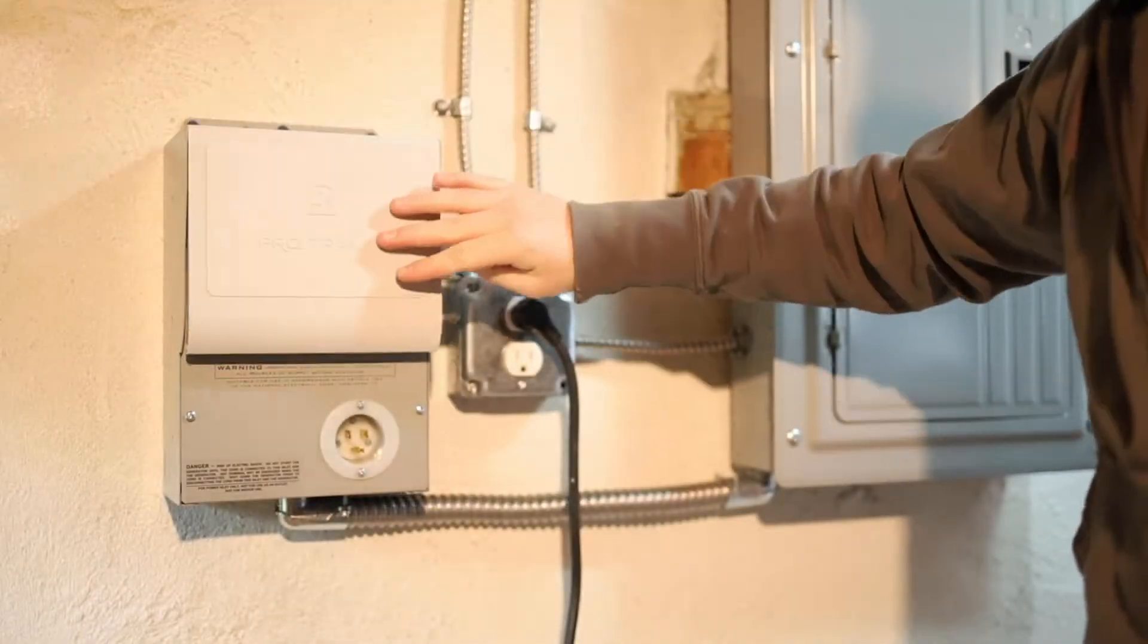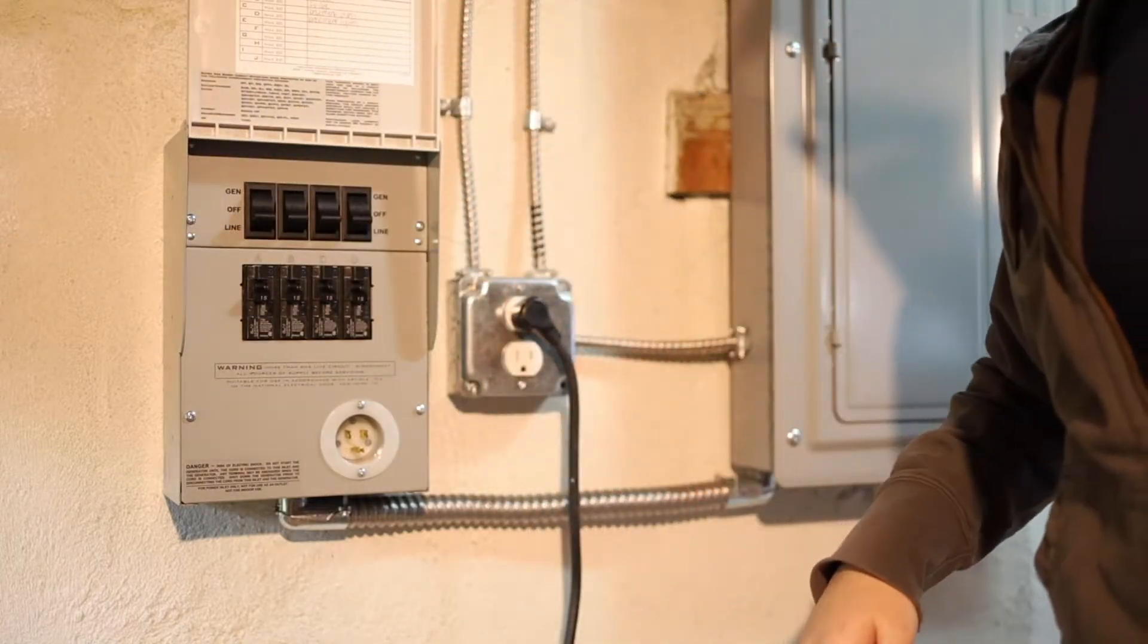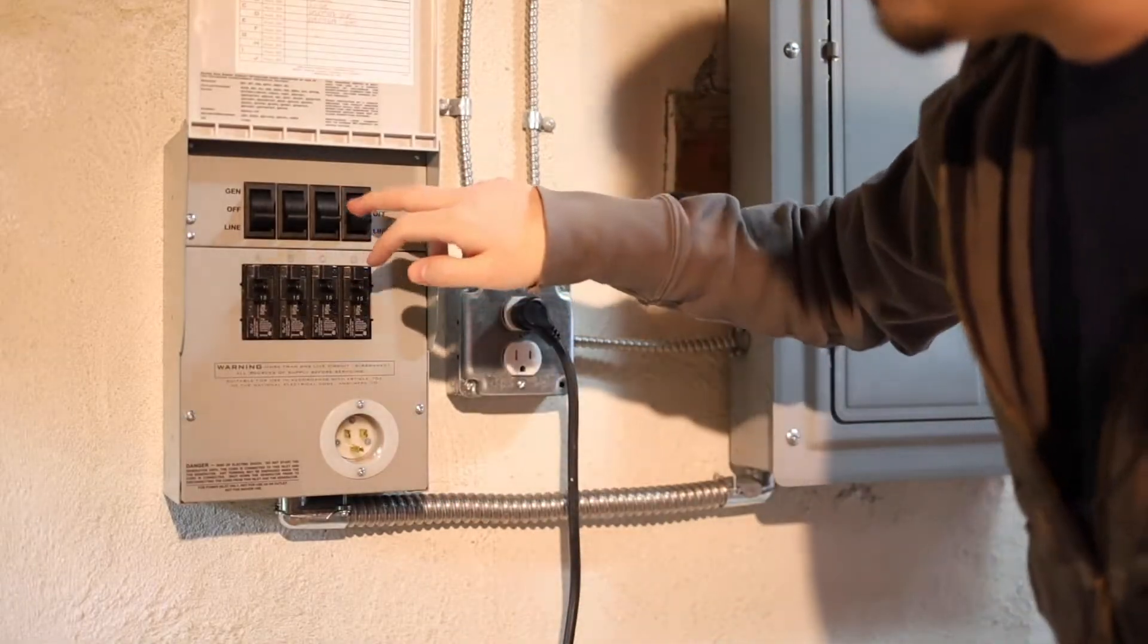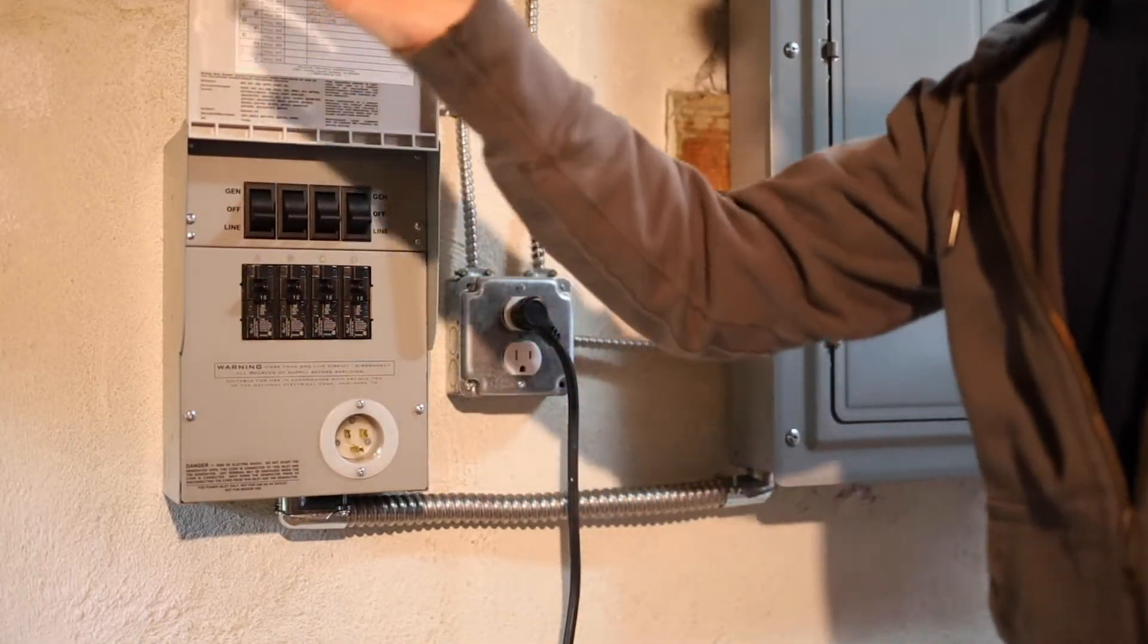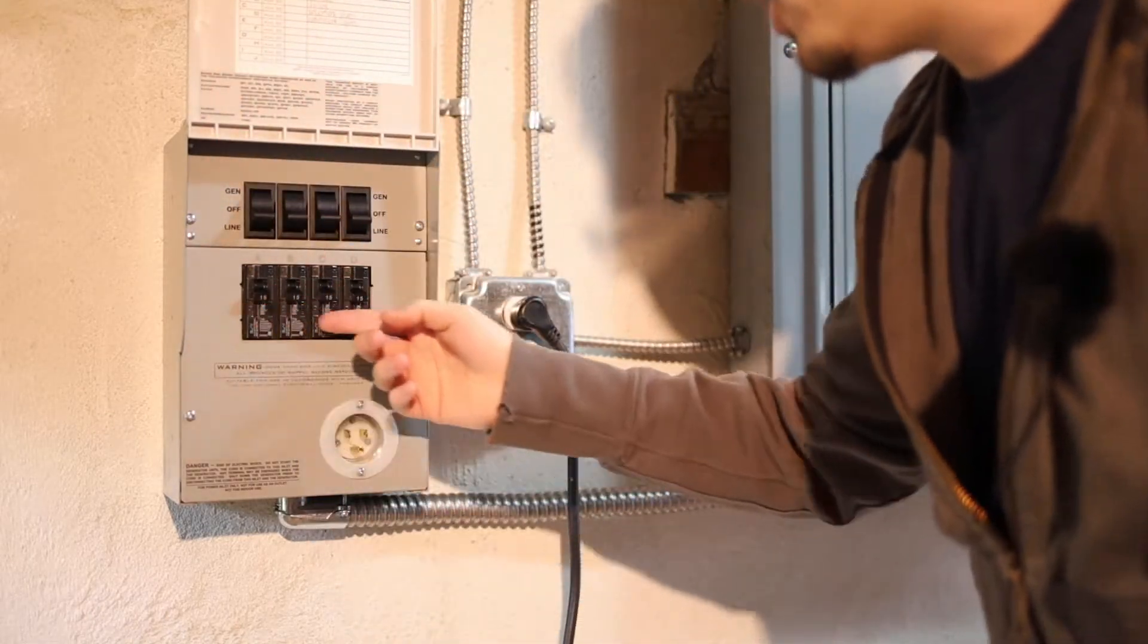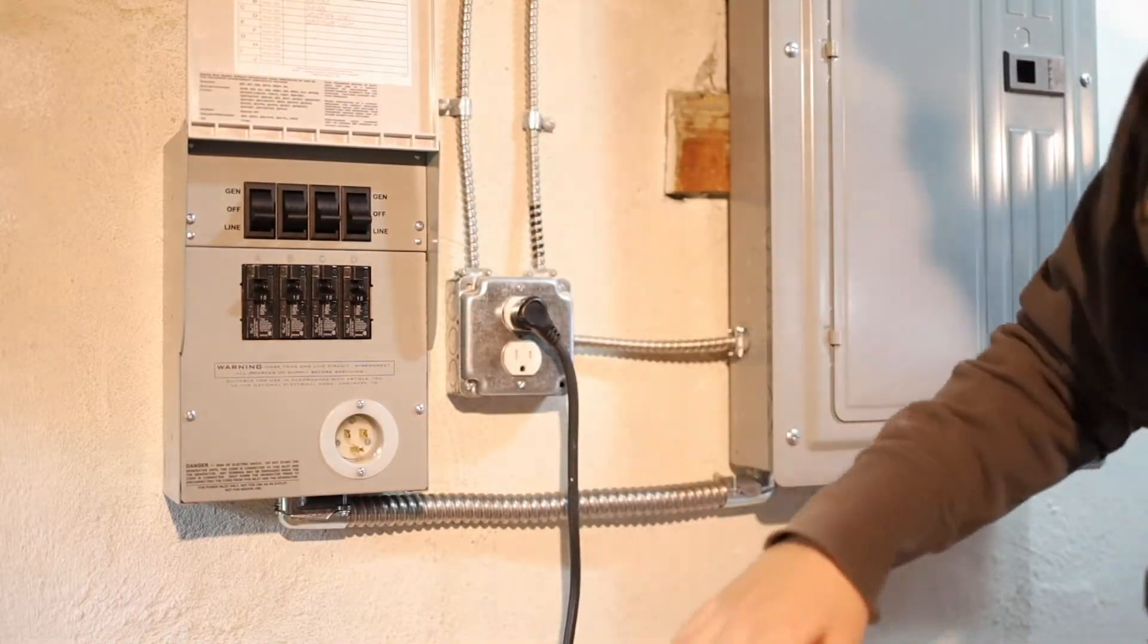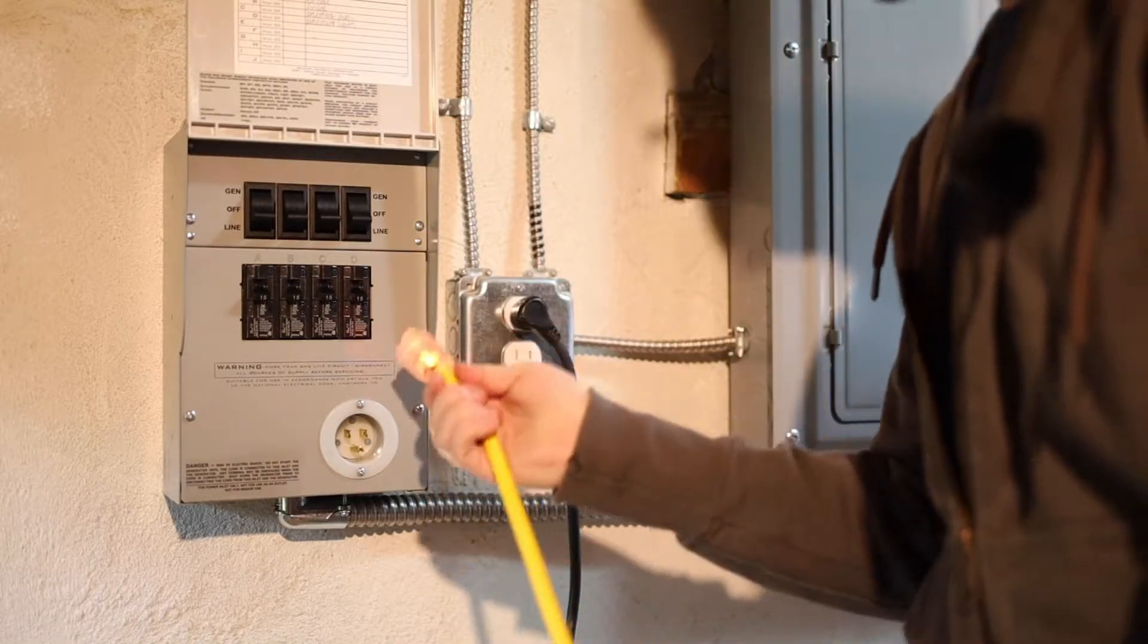As you can see, this is the transfer switch. It's a ProTrend 2. It's their smallest model. The information will be in the description below. Everything right now is on the line, which means it's coming from the shore, from the power cables outside. All the circuits are off. I have it labeled fridge, furnace, everything up here. So let me plug in the generator.